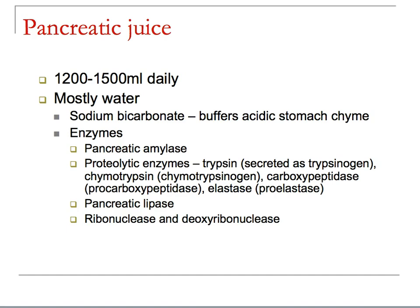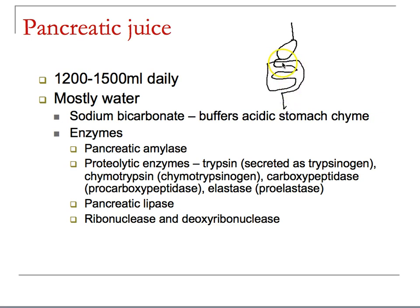Welcome back to Bio 212 at Norwalk Community College. We just finished up the introduction to pancreatic juice and now we're tying into the responsibility of the liver. Materials traveling into the alimentary system travel into the stomach, small intestine, large intestine and out. The pancreas is over here and whatever is being made inside the pancreas has to be deposited into the duodenum.